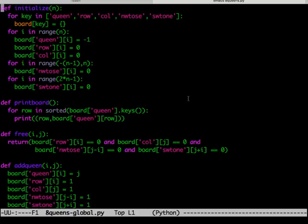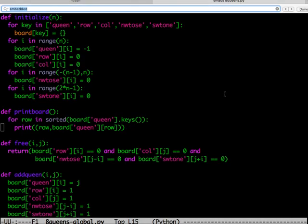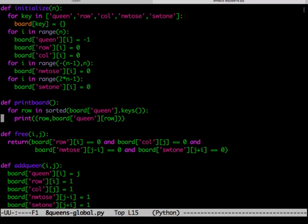We have rewritten the previous code, just removing board from all the functions. So initialize, earlier took board and n, now it just takes n. Print board does not take an argument at all. And all of them are just referring to this global value board, which you can see everywhere.